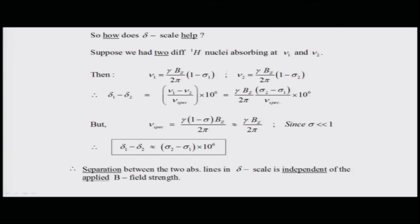This scaling ensures all nuclei in the same molecular environment are seen the same way across instruments. If two different proton nuclei absorb at ν₁ and ν₂, applying the standard shows their chemical shift difference results from shielding differences, and the separation between the two absorption lines on the δ scale is independent of the applied magnetic field strength. This is exactly what we wanted — so every NMR machine reports comparable spectra.